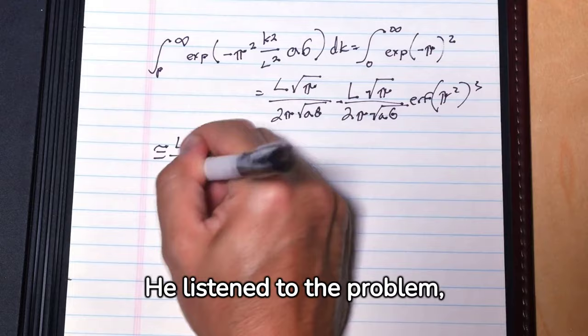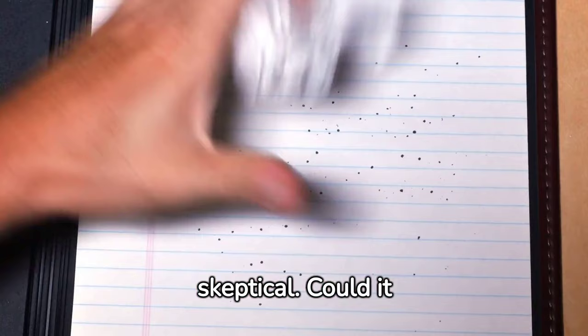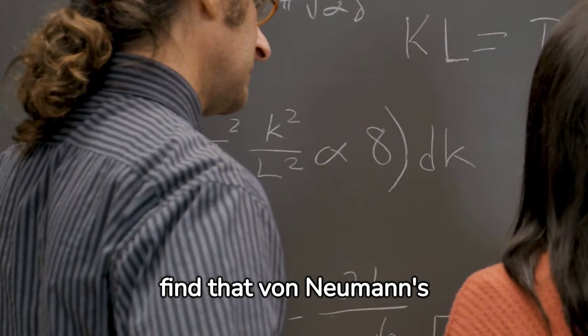He listened to the problem, scribbled something on a scrap of paper, and then, almost as an afterthought, tossed out a solution. The scientists were skeptical. Could it really be that simple? They ran back to their calculations, only to find that von Neumann's off-the-cuff solution was spot-on. He had solved in minutes what had stumped them for weeks.